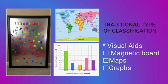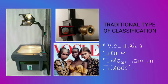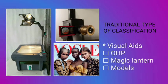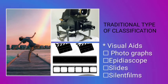Other visual aids include magnetic board, photographs, a pedescope, slides, and silent films — and those are the examples of visual aids.